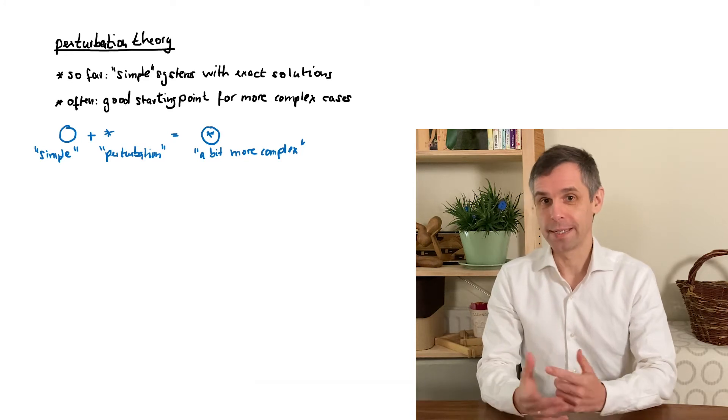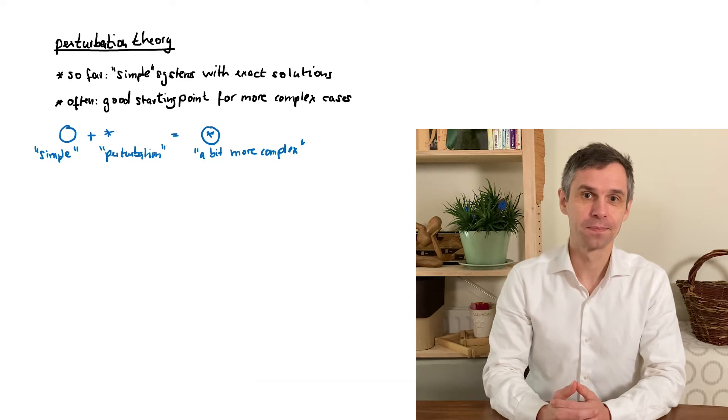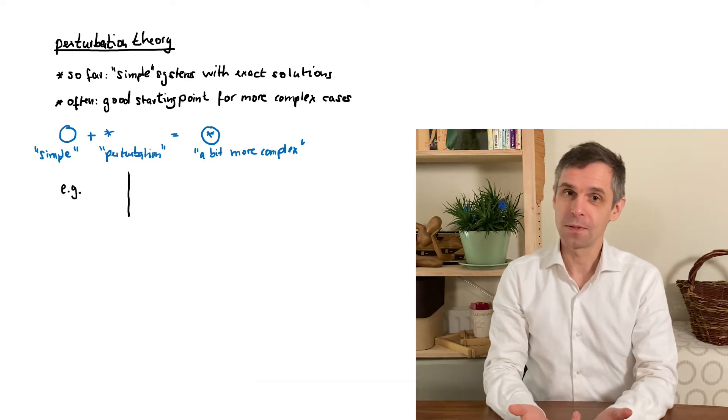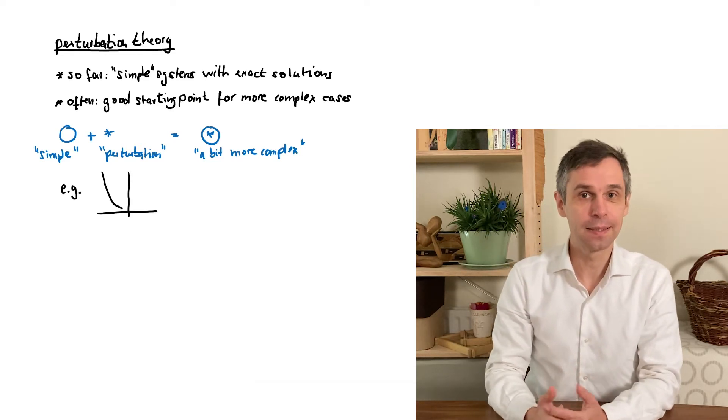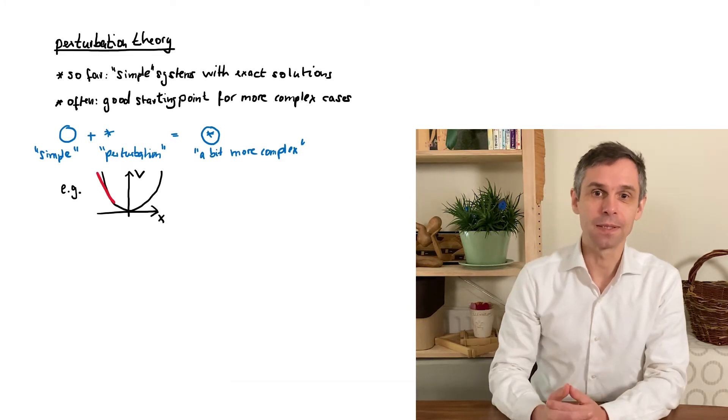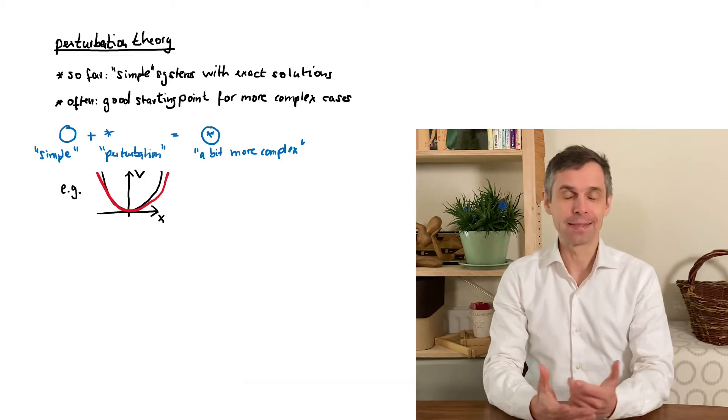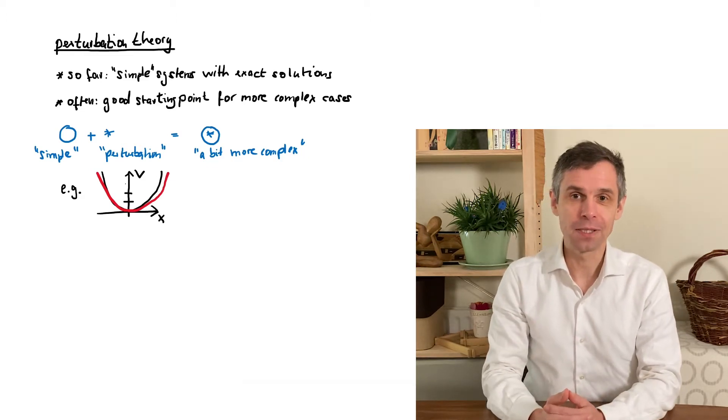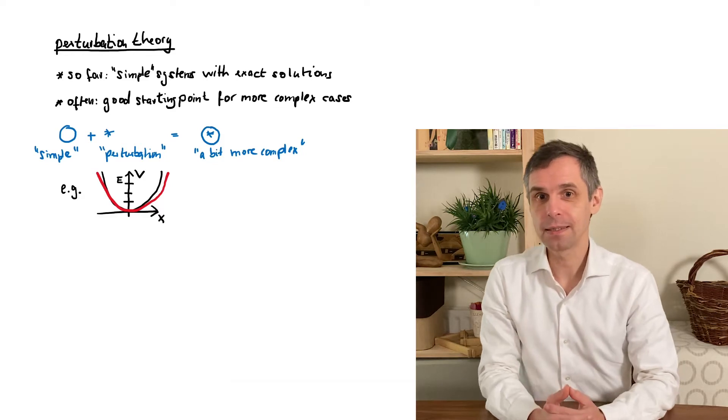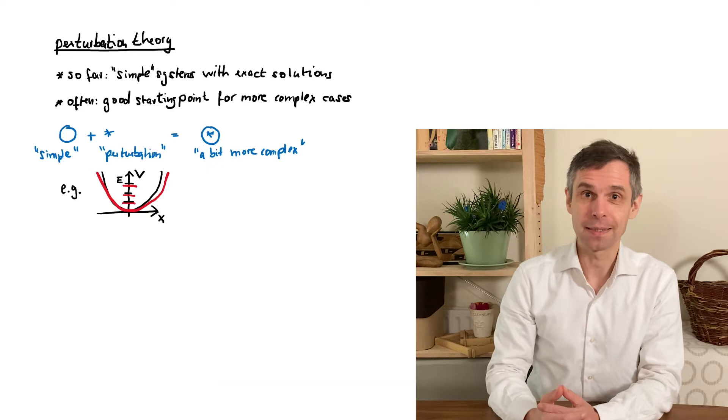I will soon translate this picture into equations but before I do so let me give you some examples. In this course we often study the motion of a quantum particle in a potential, and as it can happen, the potential might look similar to the potential of a quantum system for which we can find exact solutions. If this is the case then we can expect that the energy levels of the system that we are interested in are close to the energy levels of the system for which we have the exact solutions.